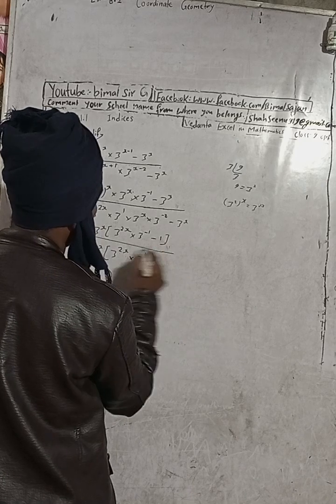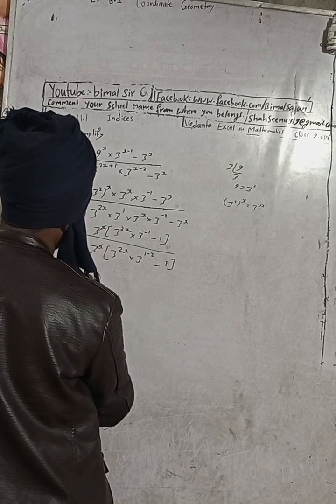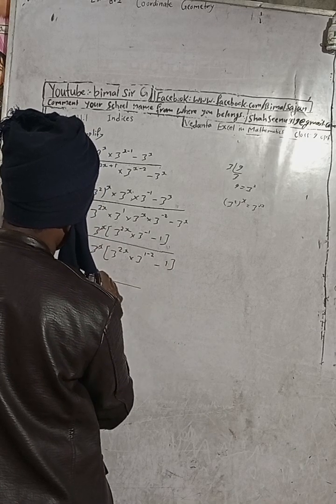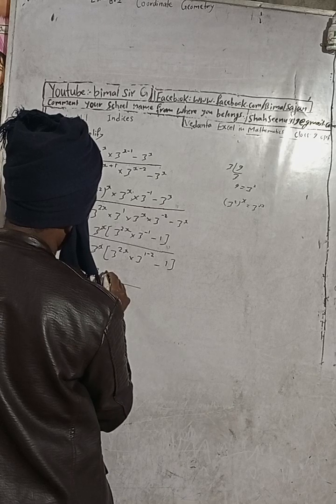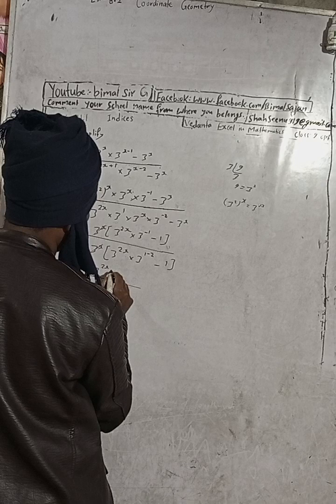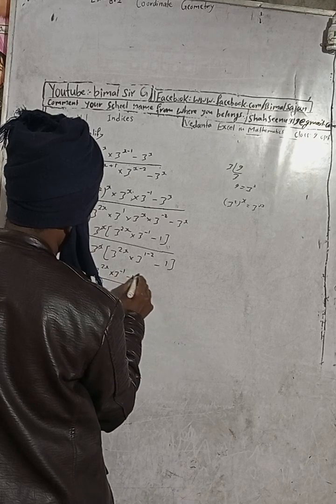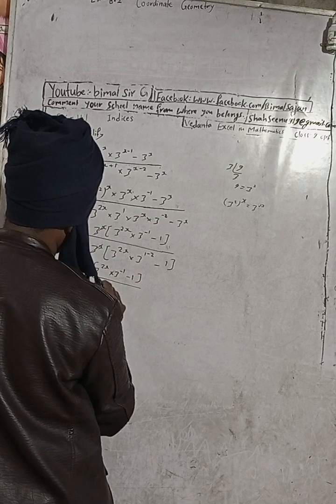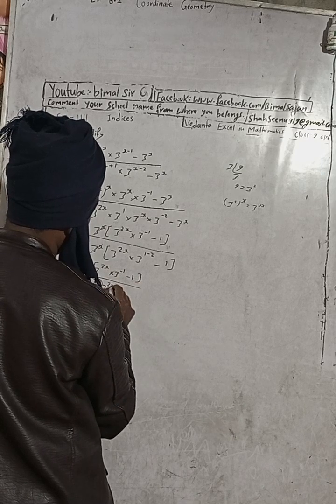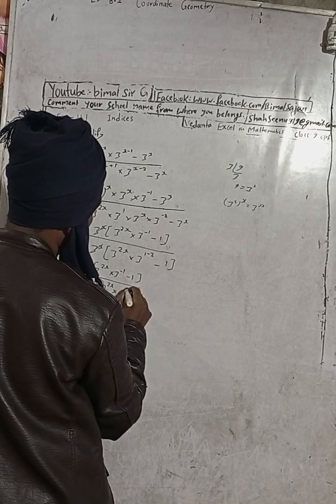And this 3 to the power is taken outside, so this is cancelled here. Now this can be written as 3 to the power 2x into 3 to the power minus 1, minus 1. This is 3 to the power 2x into 3 to the power of 1 minus 2 is minus 1, and this is minus 1.